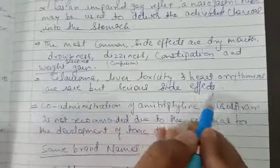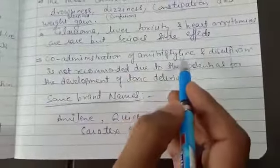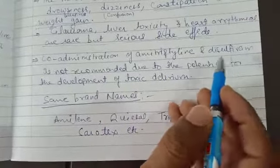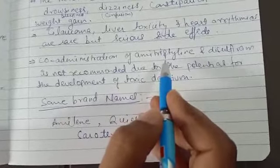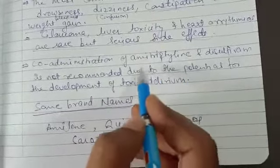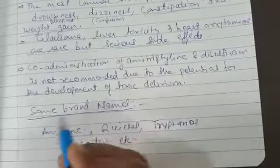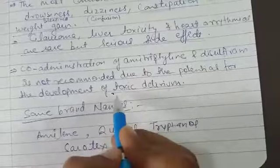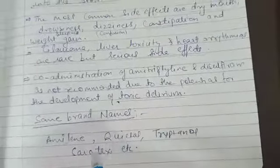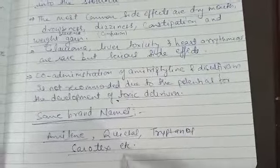The co-administration of amitriptyline and disulfiram is not recommended due to toxic delirium, so we do not give it with disulfiram. Some brand names are available like Emiline, Tryptanol, Sarotex, etc.